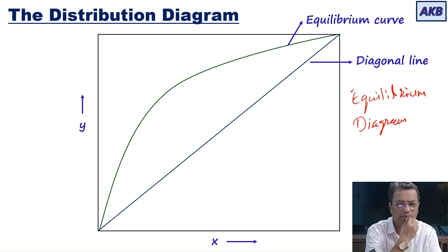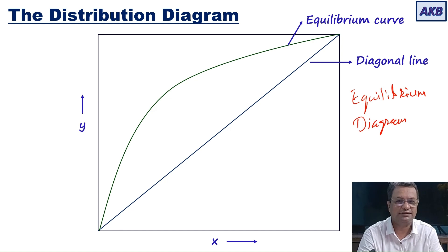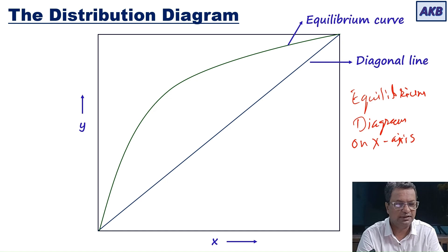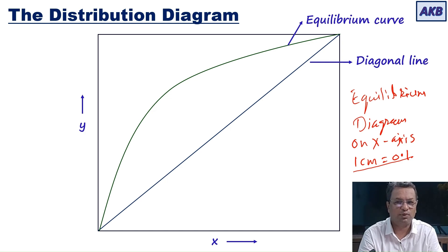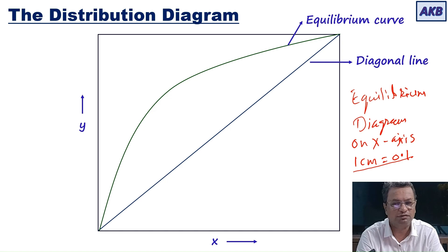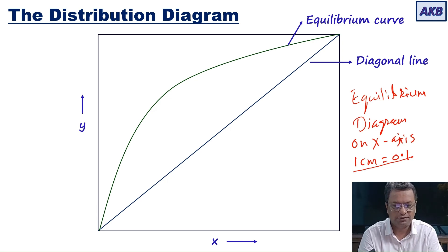It is a square plot, meaning the scale used on both axes is the same — for example, one centimeter equals 0.1 on both axes. You get a square plot with the diagonal line drawn for reference and the equilibrium curve obtained when you plot all the x and y values.